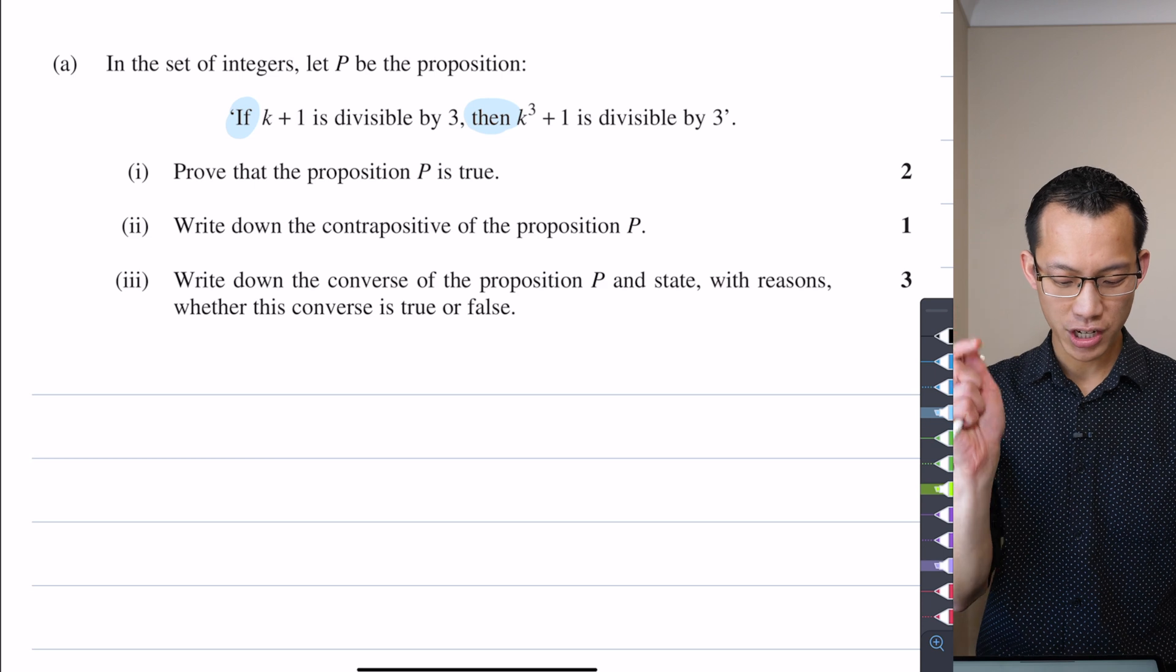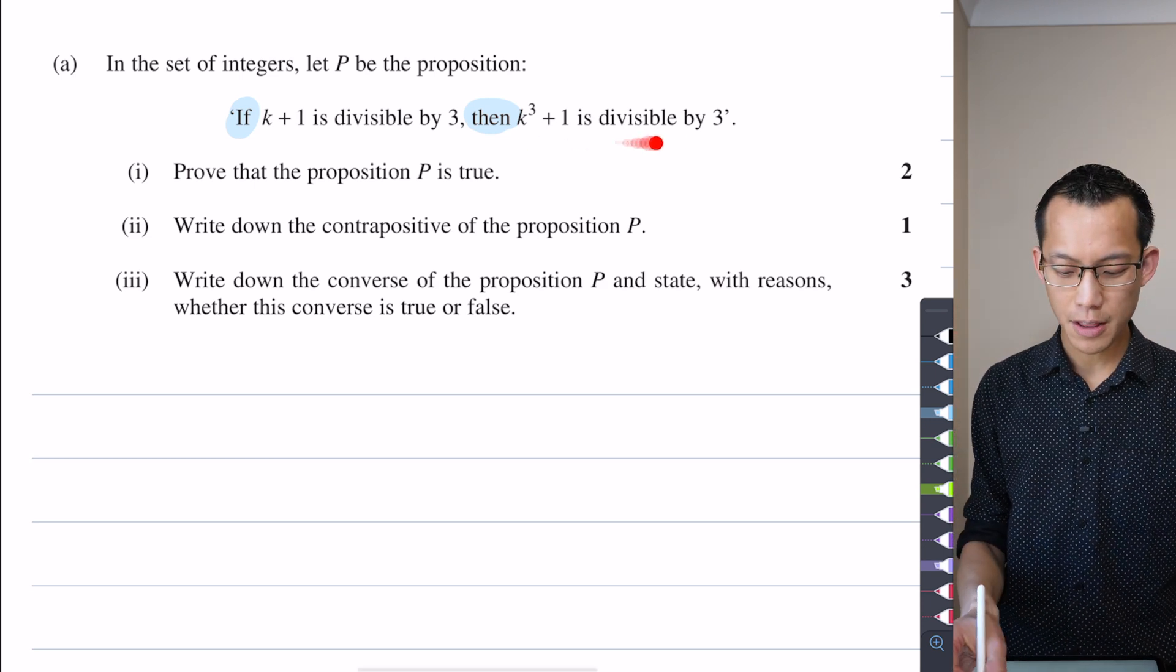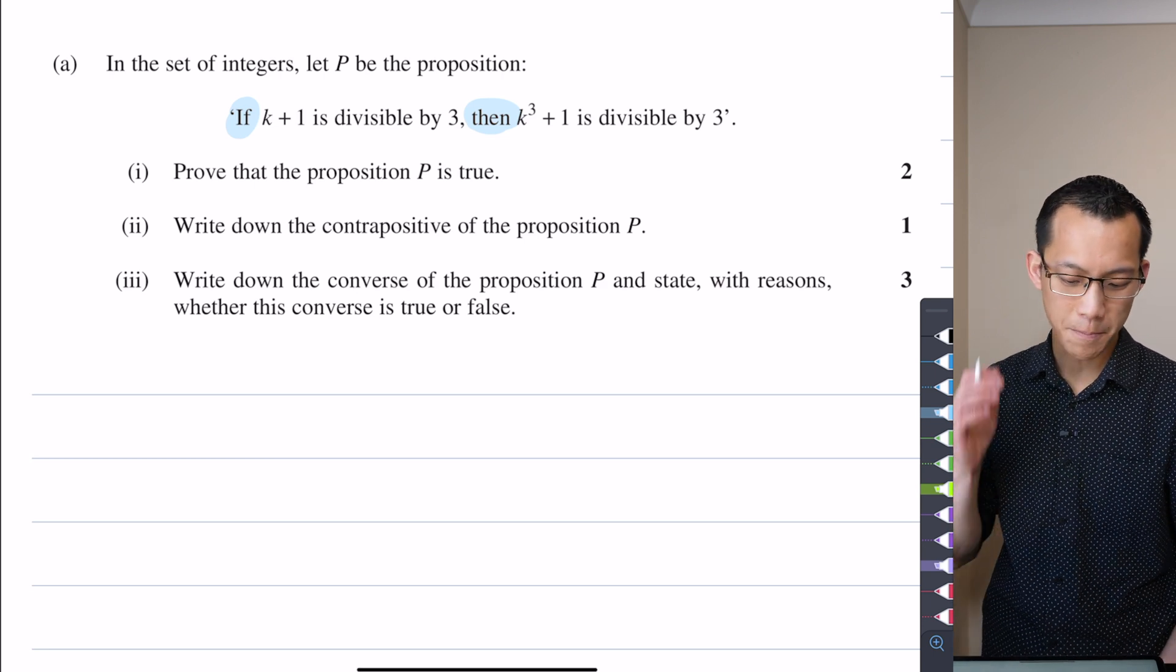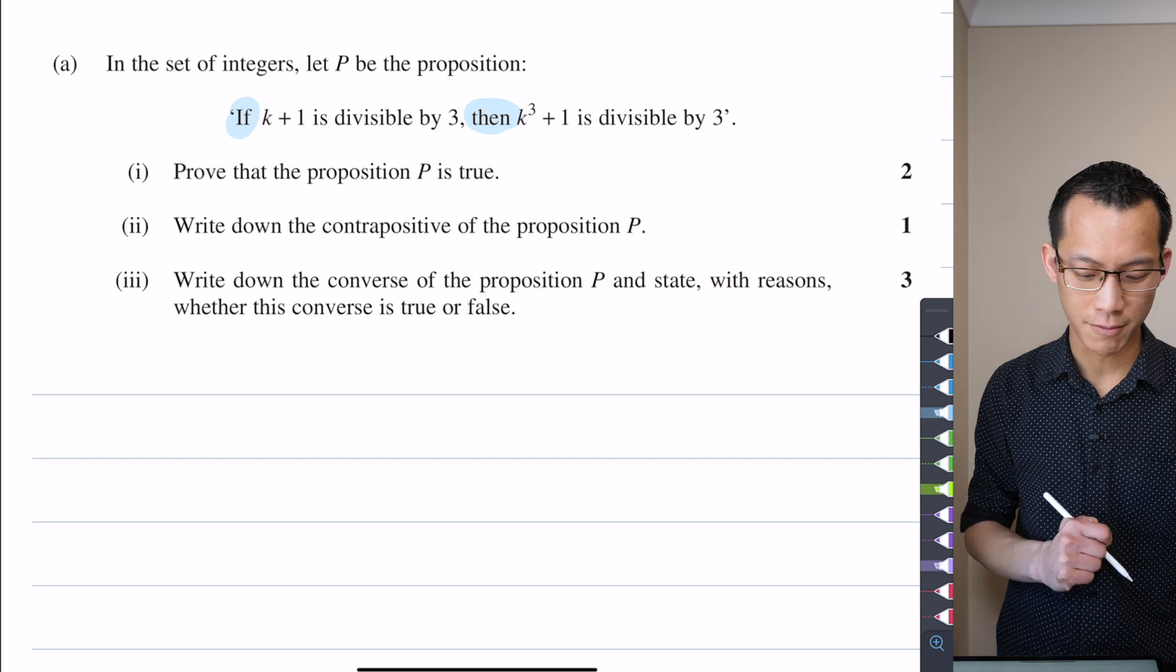Here's the condition if k plus 1 is divisible by 3. And then you've got this other part over here, which we call the consequent proposition. What's the result if you meet that first condition, right?